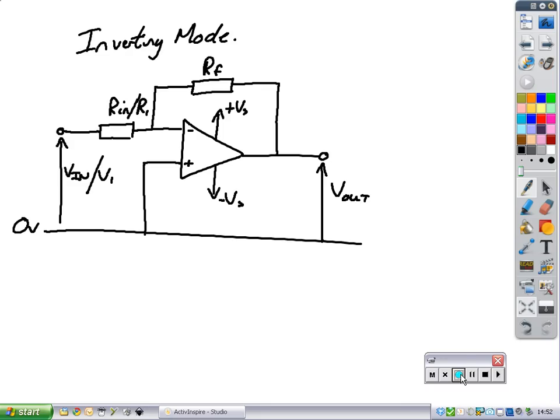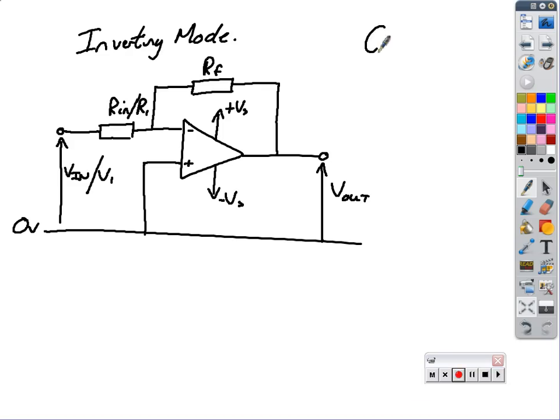The gain of an operational amplifier, what makes it bigger? The gain is equal to, well, this is an inverting mode amplifier, so the gain is going to be equal to negative RF over R1. This is just what we have to remember. RF over R1.